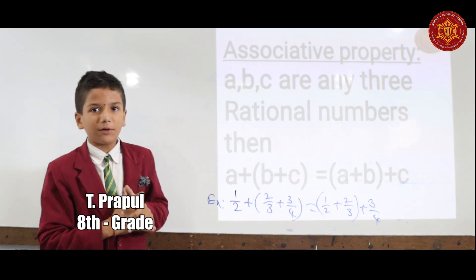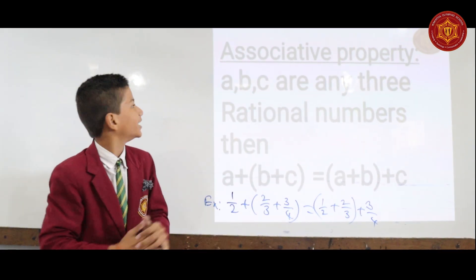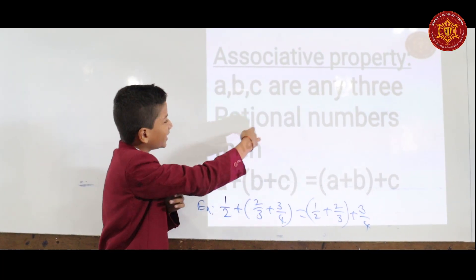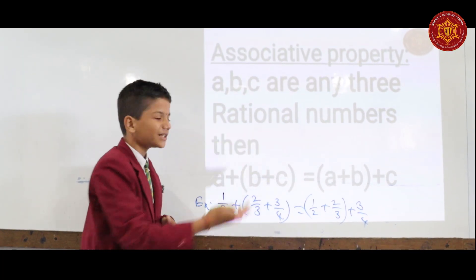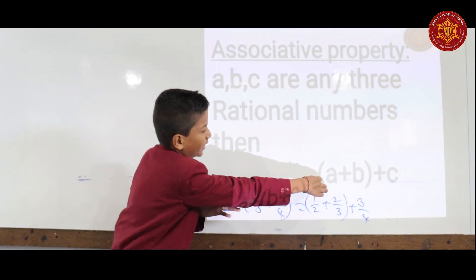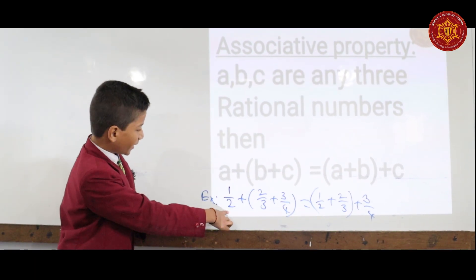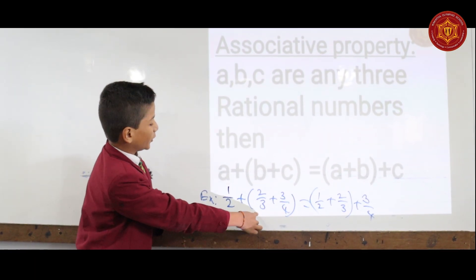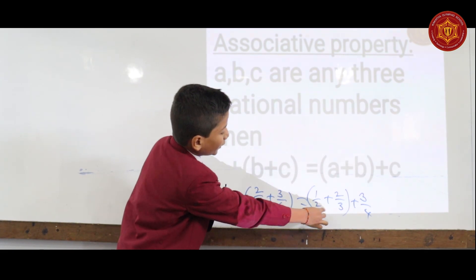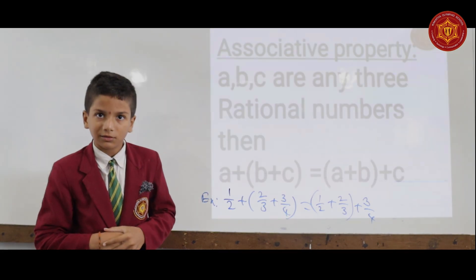Today, I would like to explain the concept of associative property under addition. If A, B, C are any three rational numbers, then (A plus B) plus C is equal to A plus (B plus C). For example, (1/2 plus 2/3) plus 3/4 is equal to 1/2 plus (2/3 plus 3/4). Thank you.